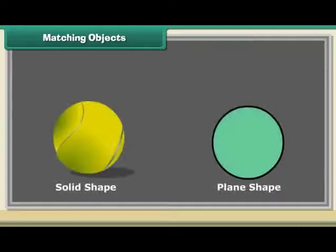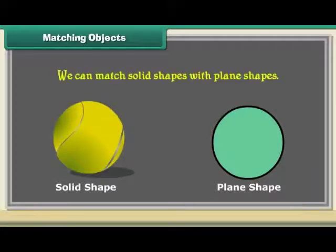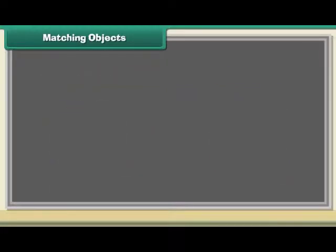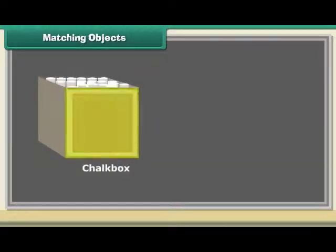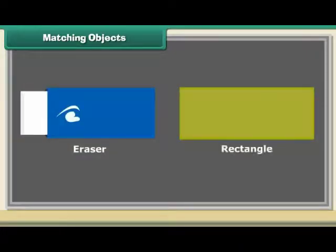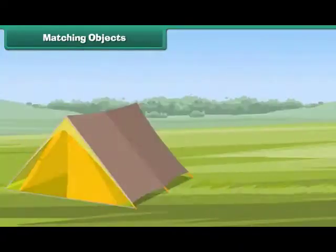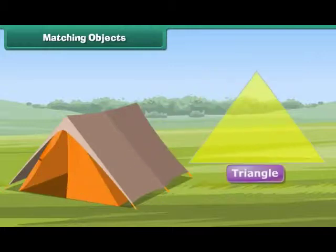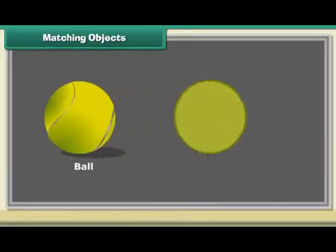Matching objects. We can match solid shapes with plain shapes. We can match a chalk box with a square, an eraser with a rectangle, a tent with a triangle, and a ball with a circle.